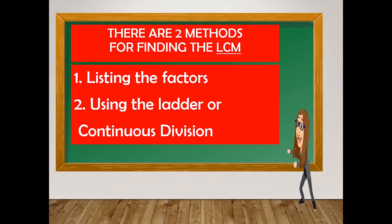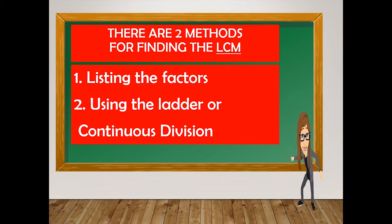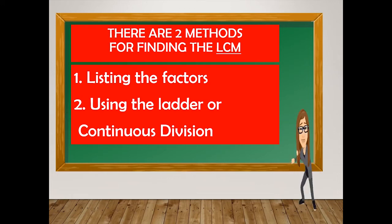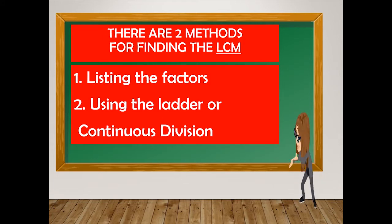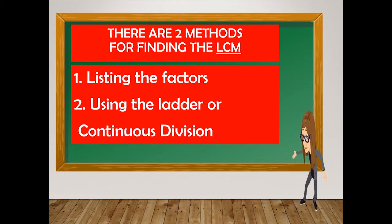There are two methods of finding the LCM, or the least common multiple. First is the listing method, then using the ladder or continuous division method.